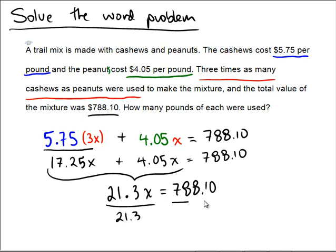Next divide. Divide by 21.3. And it looks like we get x equals 788.1 divided by 21.3, which is 37.